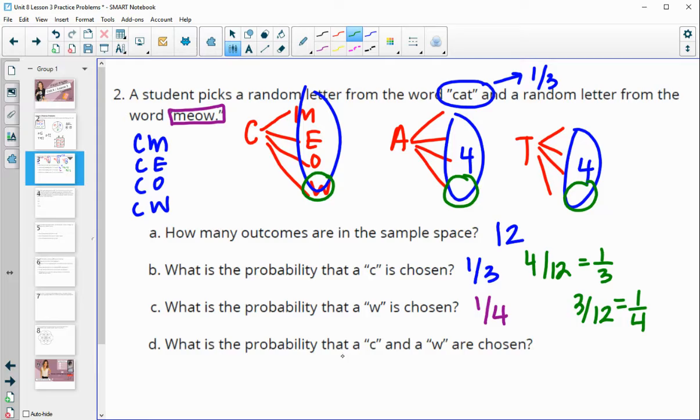So what is the probability that a C and a W are chosen? So that we chose C and we chose W. So that's only in this one option, C, W. You never get C in any of these two. So you have the C, W in one of your 12 total options. So the probability that C and W are chosen together is one twelfth.